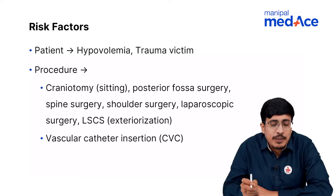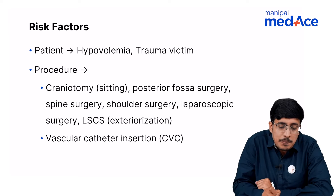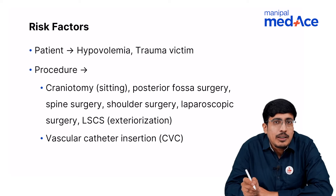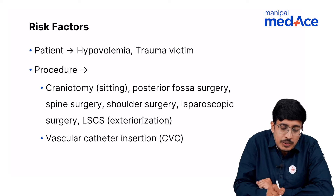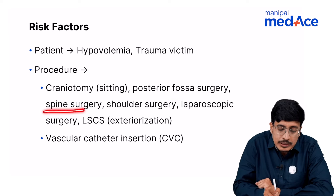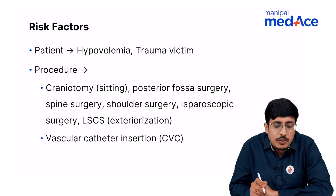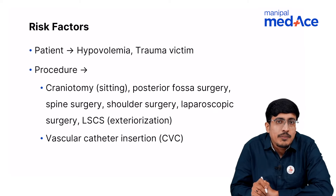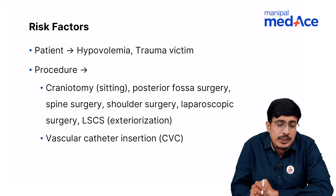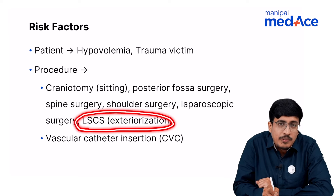Risk factors for venous air embolism include a trauma victim with massive maxillofacial trauma who is in a hypovolemic state and expected to receive multiple transfusions and injections. Patients undergoing craniotomies in sitting position, such as posterior fossa or spine surgeries, as well as shoulder surgery or laparoscopic surgery, are at higher risk. During lower segment caesarean section, when obstetricians exteriorize the uterus, this also increases the risk of venous air embolism.